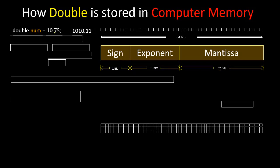If we convert this number into binary then it will be 1010.11. And then we have to convert this number in this format: 1 point some binary number and then 2 to the power exponent. If we convert this number in this format then it will look like 1.01011 times 2 to the power 3.